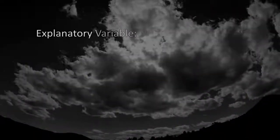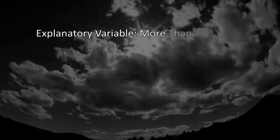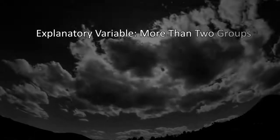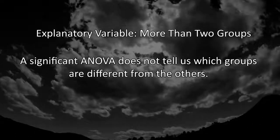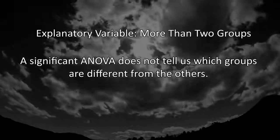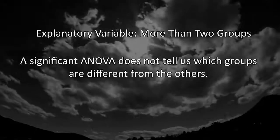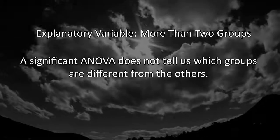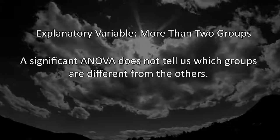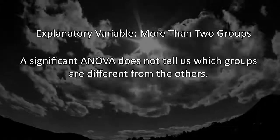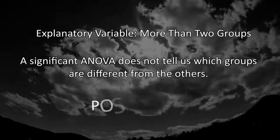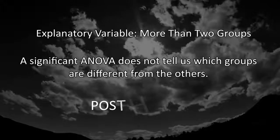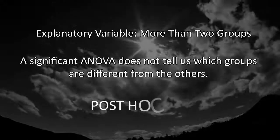In the case where the explanatory variable represents more than two groups, a significant ANOVA does not tell us which groups are different from the others. To determine which groups are different, we would need to perform a post-hoc test.